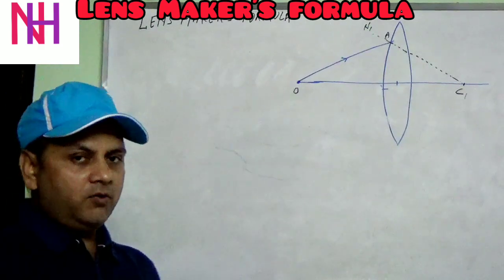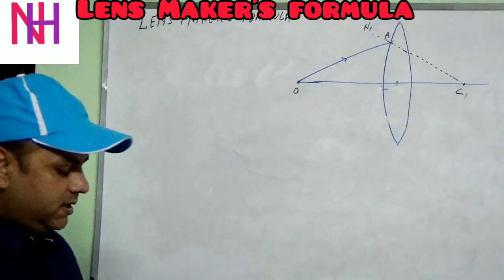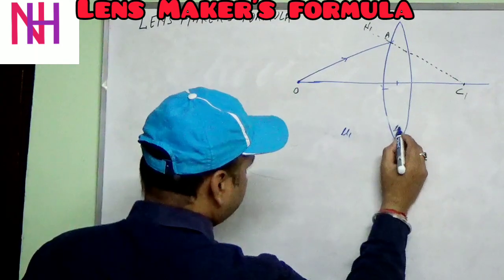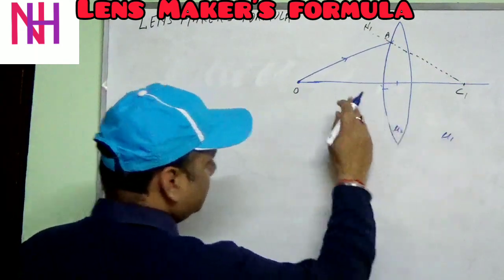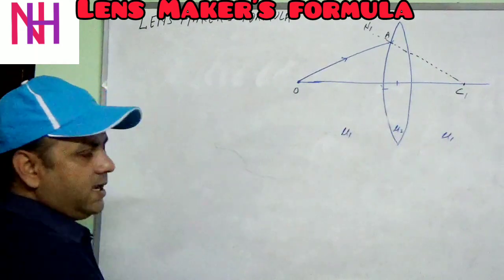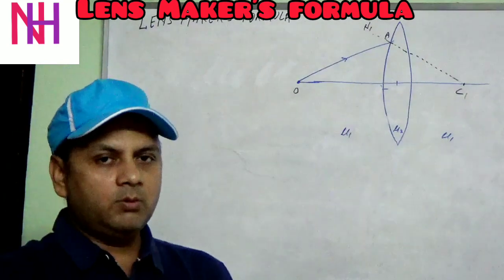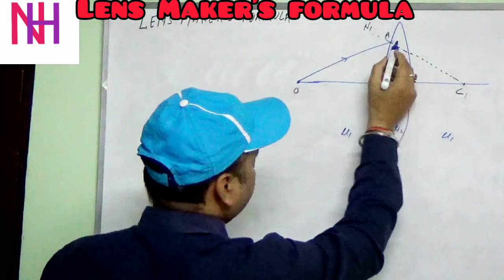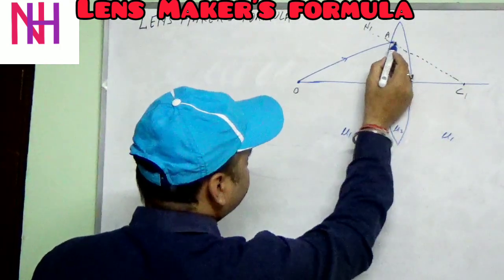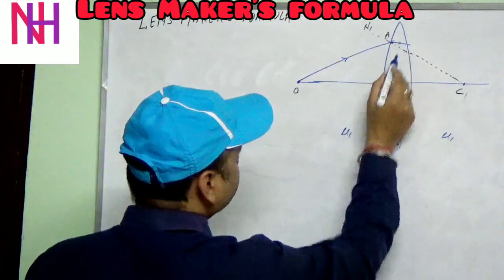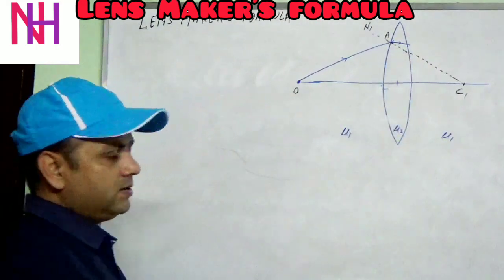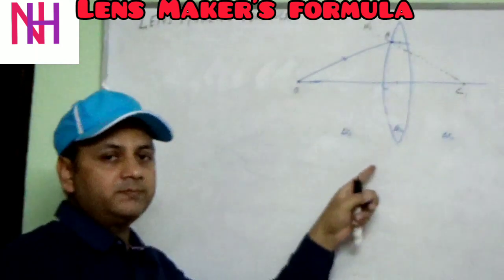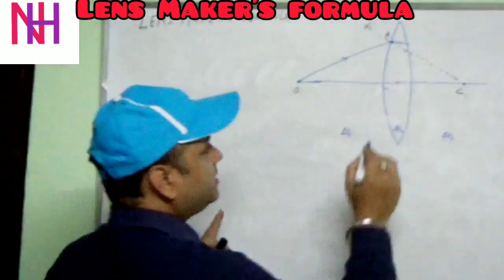The ray of light travels from medium mu1 to mu2. Since the glass is a denser medium, the ray bends towards the normal. After passing through the first surface, it hits the second surface, where it goes from denser to rarer medium, and bends away from the normal.